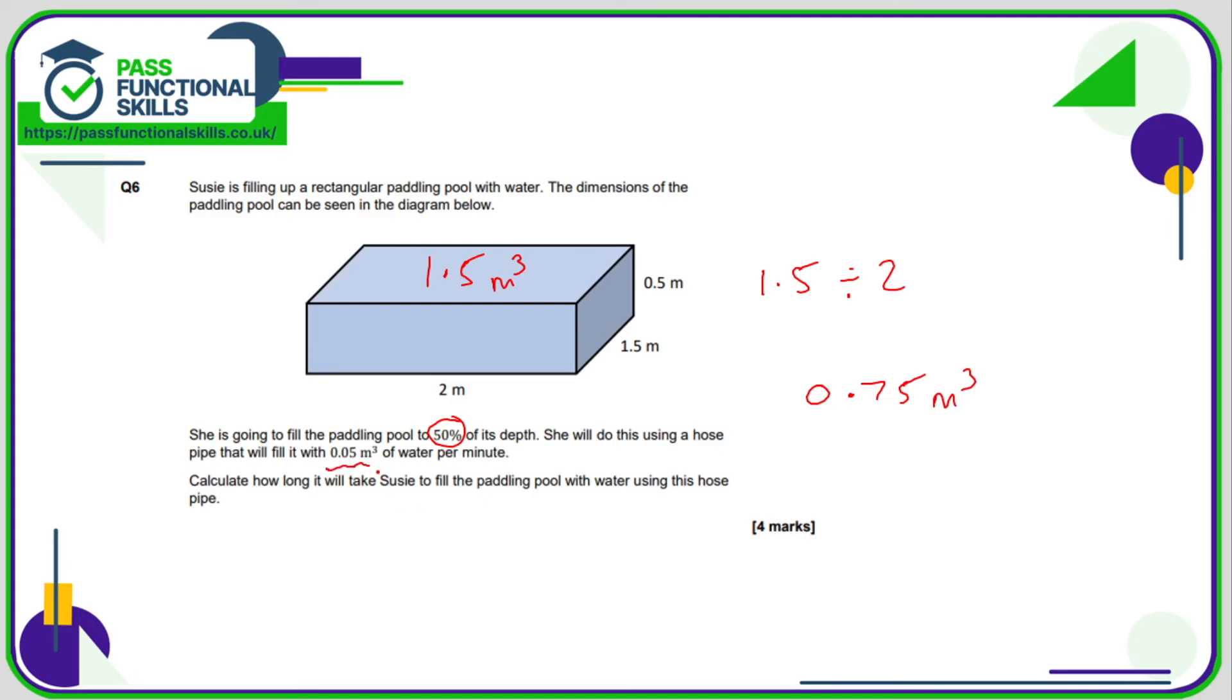Now the hose fills it at 0.05 cubic meters per minute, so how long will it take to fill it to this capacity? We want to work out how many 0.05s go into 0.75, so our calculation is 0.75 divided by 0.05, and that comes to a total of 15. So the answer is therefore 15 minutes.